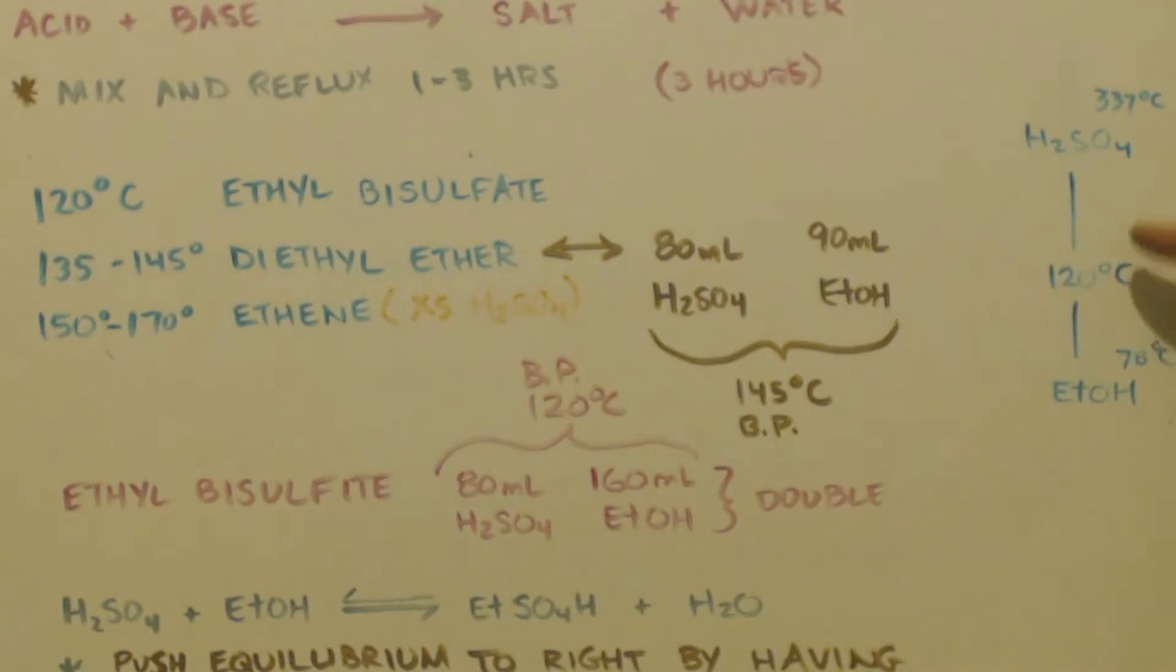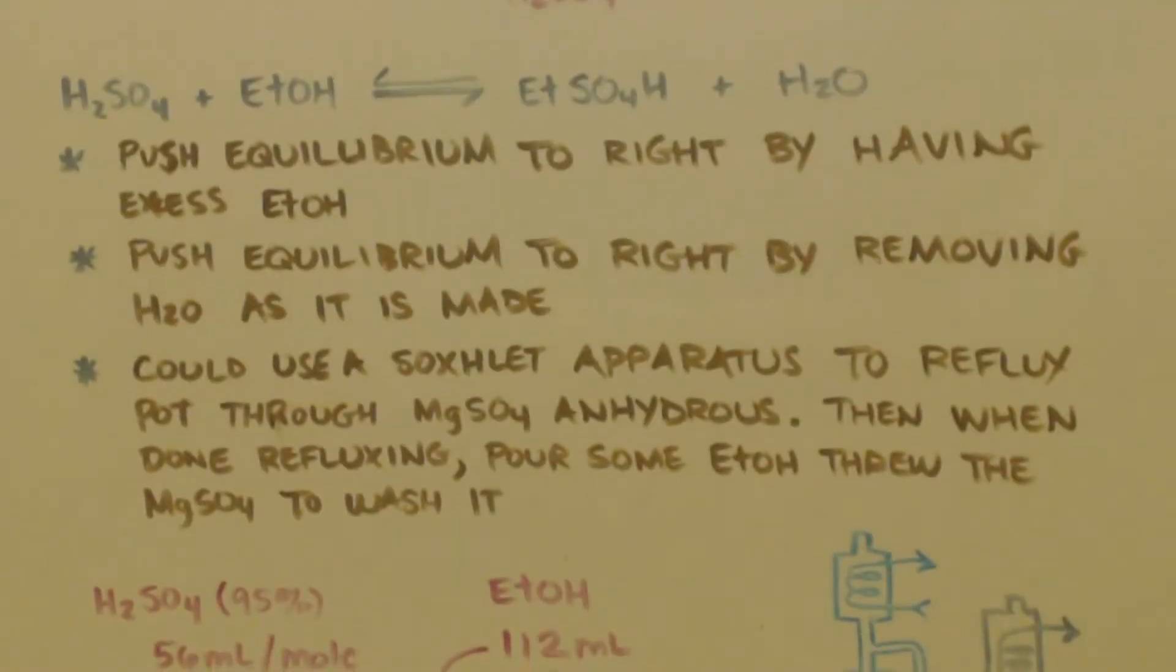If I get it up to 125 Celsius and it's not boiling, that means I need to add some ethanol in so I can lower the boiling point. If it's boiling and it's not 120°C yet, that means I need to add just a little bit more sulfuric acid to get the boiling temperature up to 120, 125.